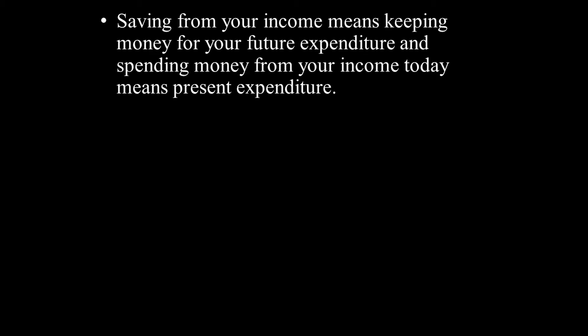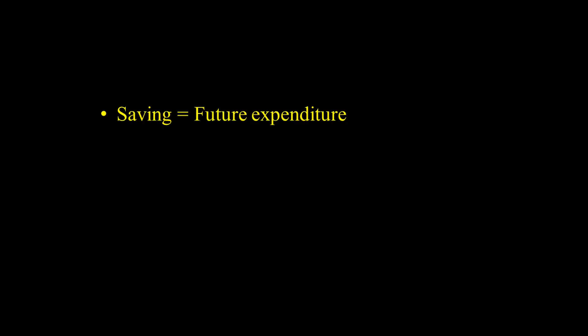We are going to use the variable of saving. Saving from your income means keeping money for your future expenditure, while spending money from your income today means your present expenditure. This means saving is equal to future expenditure.